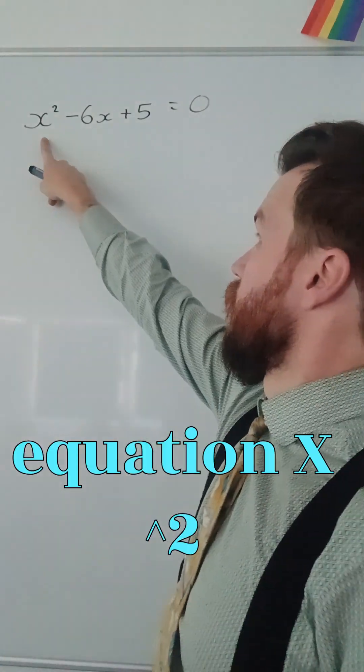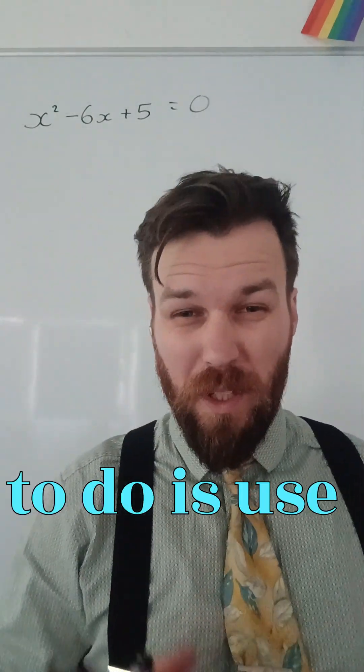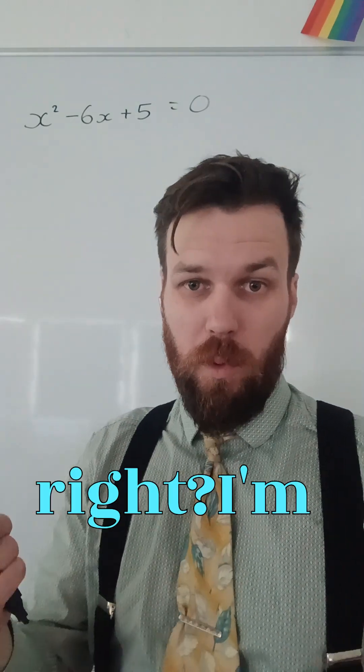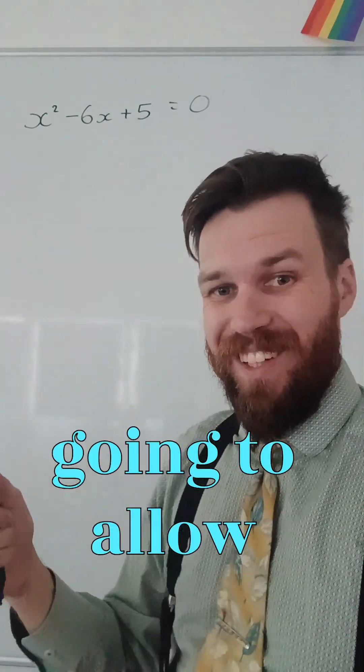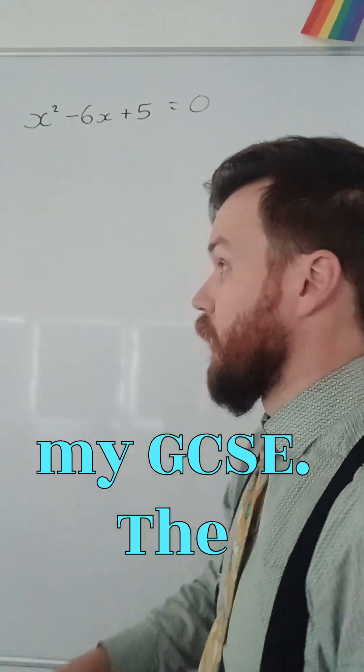So, I've been given an equation, x squared minus 6x plus 5 equals 0. What I want to do is use it to complete the square. I'm going to complete the square with this equation, and that's going to allow me to do lots of things, but mainly get some marks on my GCSE.